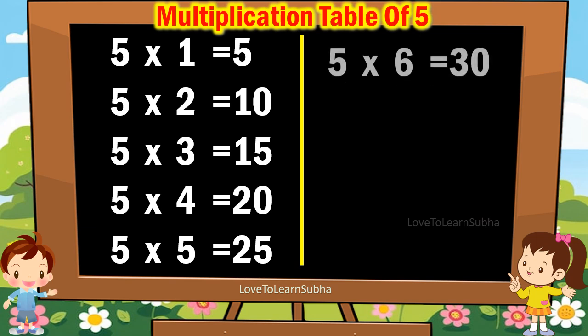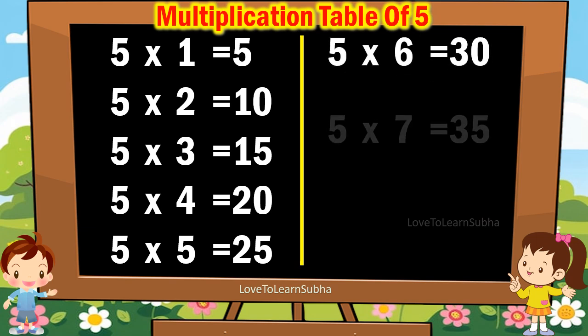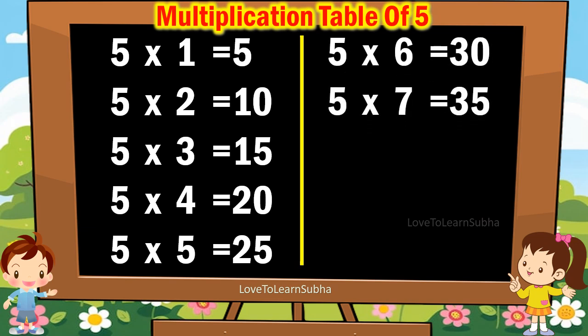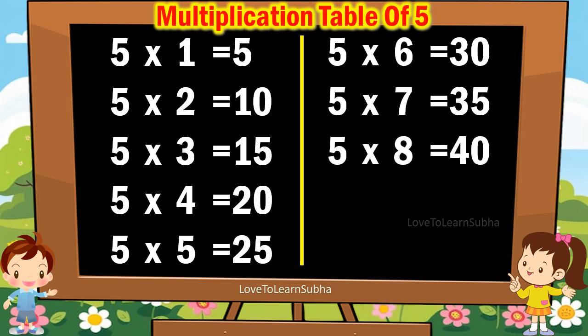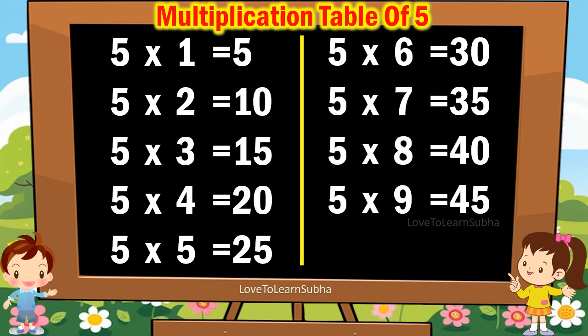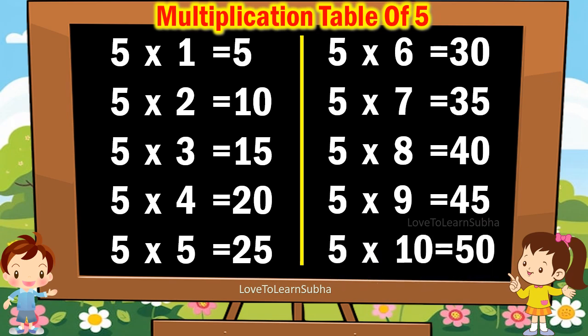5 6s are 30, 5 7s are 35, 5 8s are 40, 5 9s are 45, 5 10s are 50.